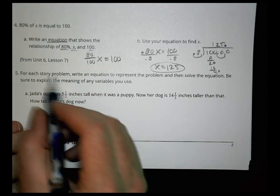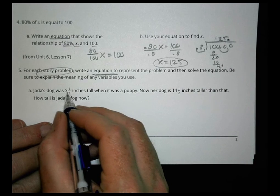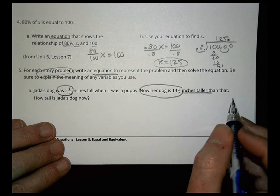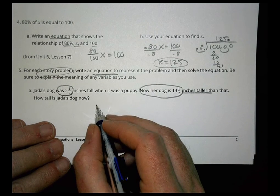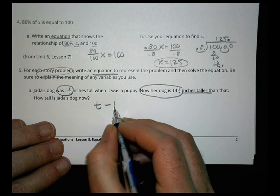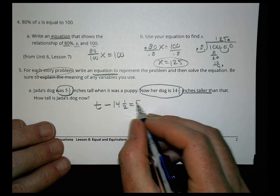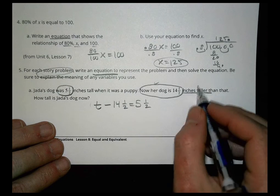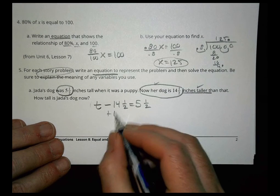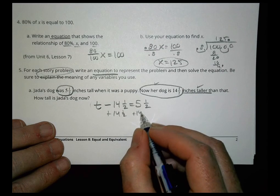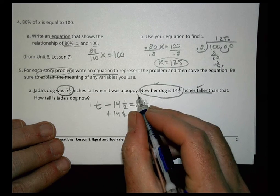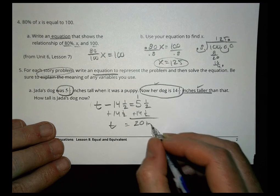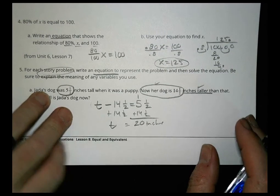Number 5: Write a story problem equation. Jada's dog was 5 and a half inches tall; now it's 14 and a half inches taller than that. How tall is the dog now? If we take the height and subtract the amount it grew, 14 and a half, that puts us back to 5 and a half. To solve, we add 14 and a half to 5 and a half: half plus half is 1, then 14 plus 5 plus 1 is 20. The dog is 20 inches tall now.